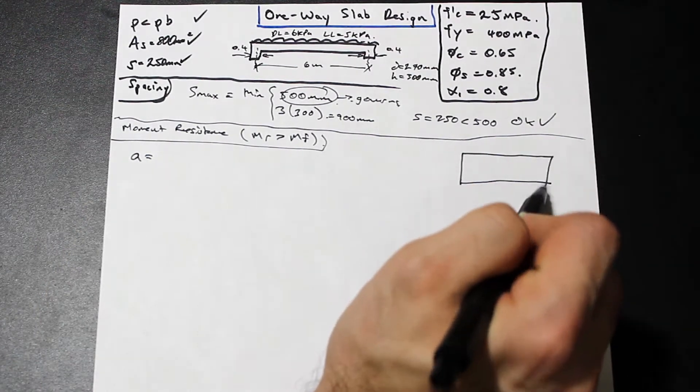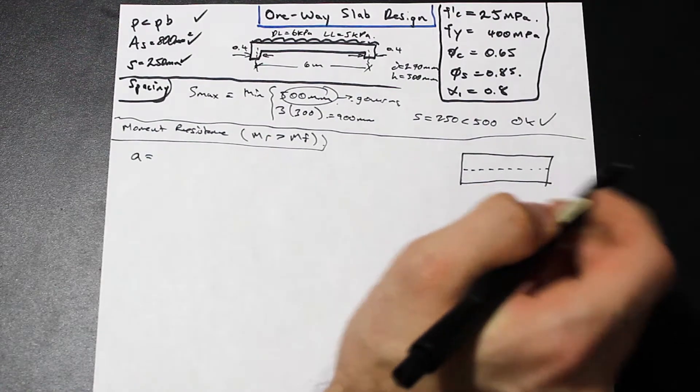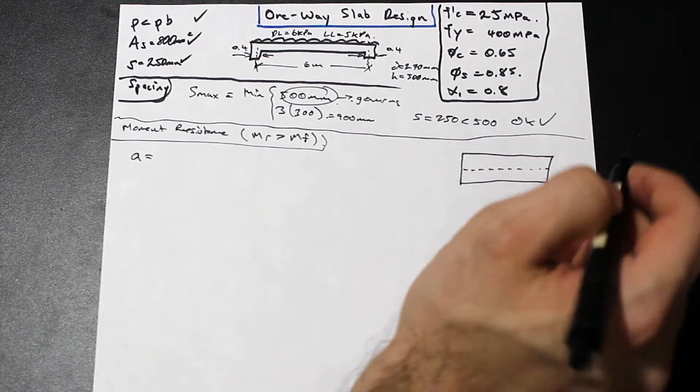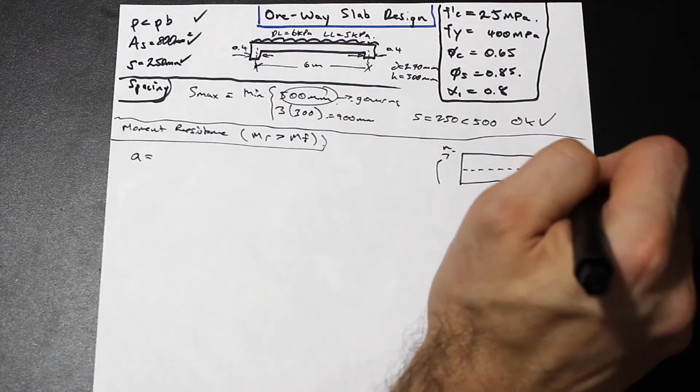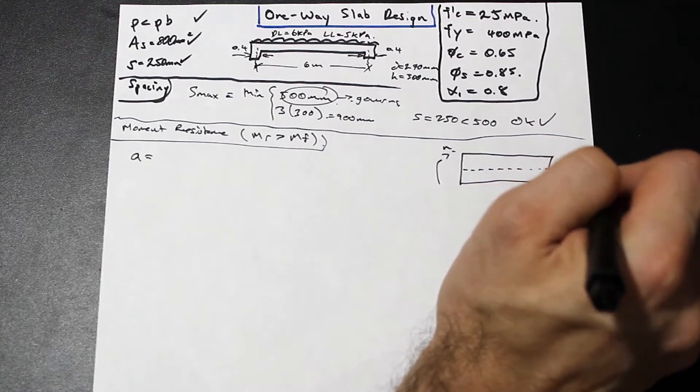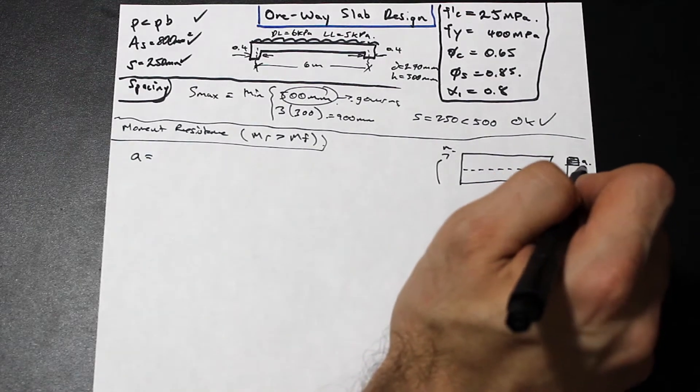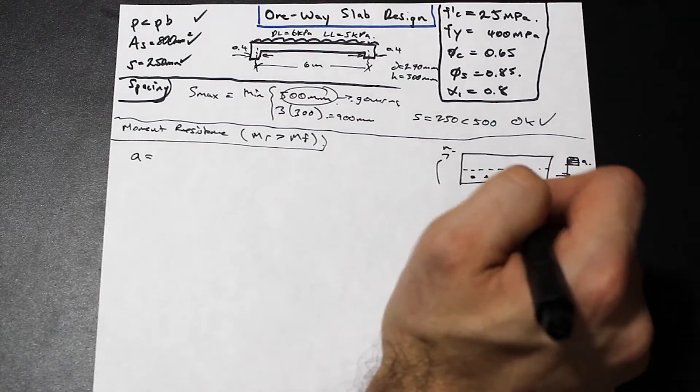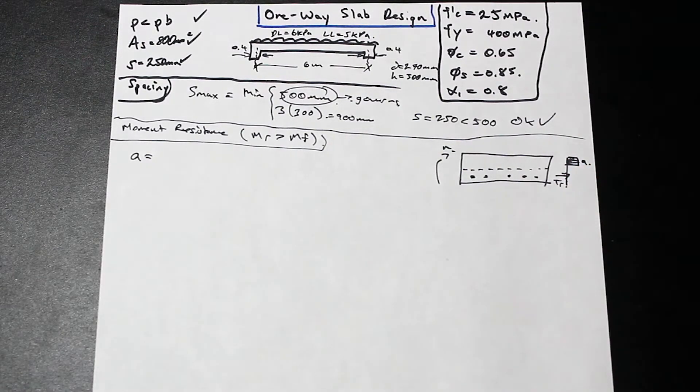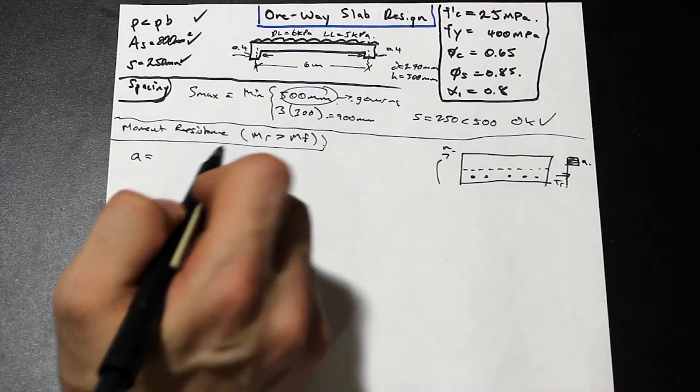As we know, A is the depth of the compressive stress block, the equivalent compressive stress block of the beam or the slab in this case. I'll just draw it over here. We have some neutral axis subjected to some moment. We have a stress distribution and we have some compressive stress block A here, and we have our T over here, and this is our steel. That's just a little reminder there.